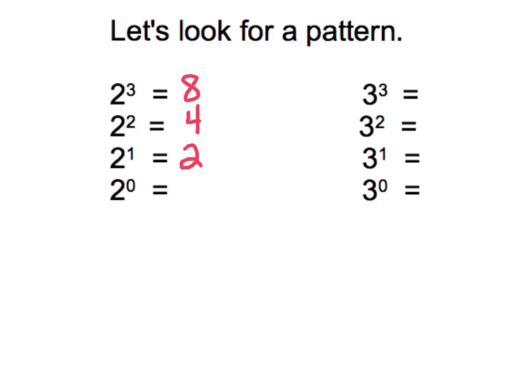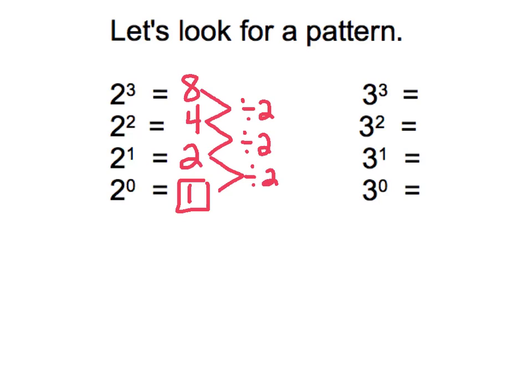I'm going to try to use the pattern that's happening to figure out what 2 to the zero power is. If I take a look at what is happening between 8 and 4, I know that 8 divided by 2 gives me 4. Continuing that pattern, 4 divided by 2 gives me 2. So it would make sense that 2 divided by 2 should give us the next number in the pattern — that would be 1.